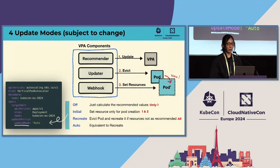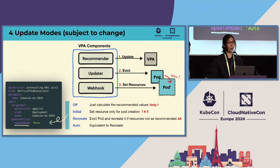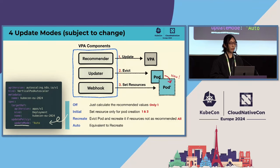The third mode, Recreate, is the most proactive approach — it not only applies recommendations to new pods, but also evicts and recreates running pods. It's ideal when requests do not align with recommended values. And last, Auto mode — currently it works the same as Recreate.